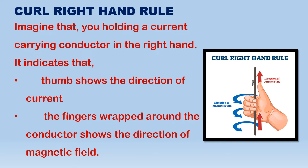So, the current pathway is a straight line. And the magnetic field is formed around it.